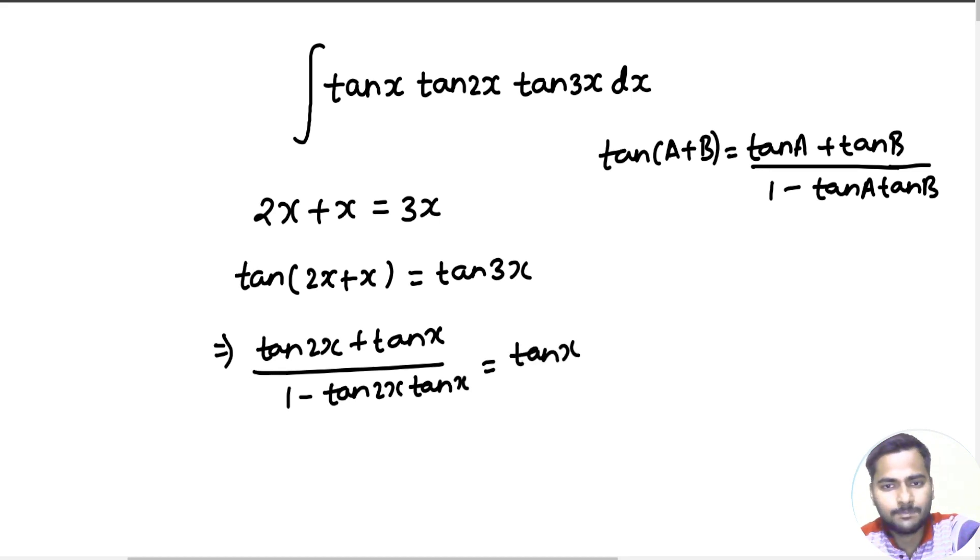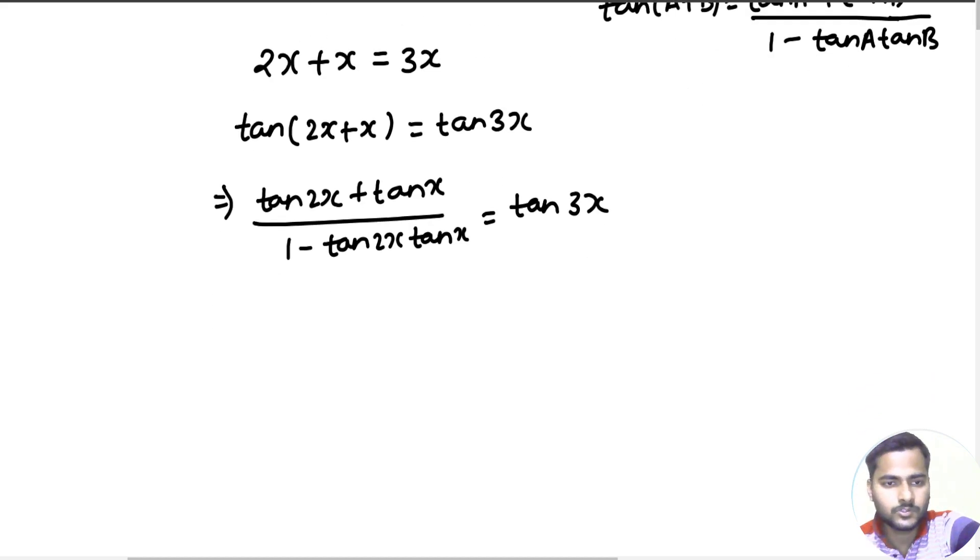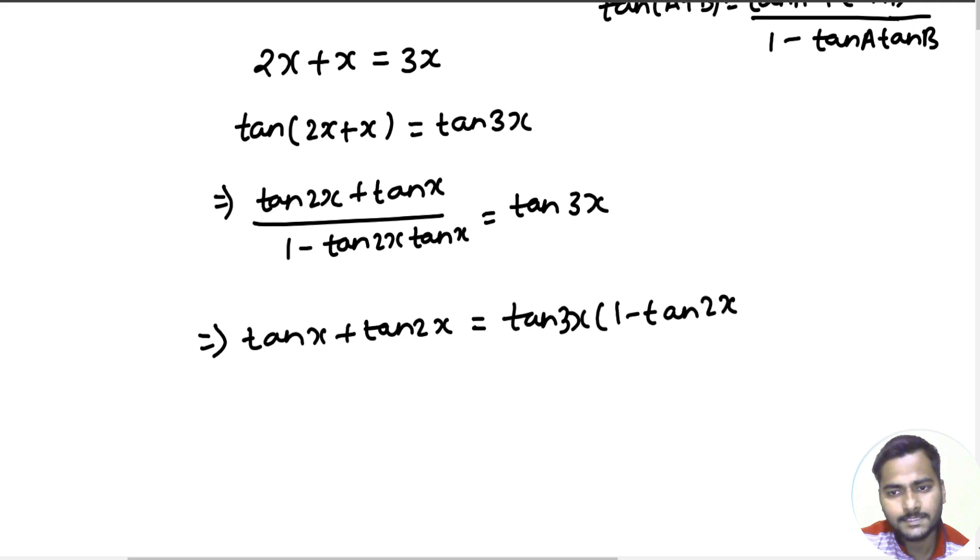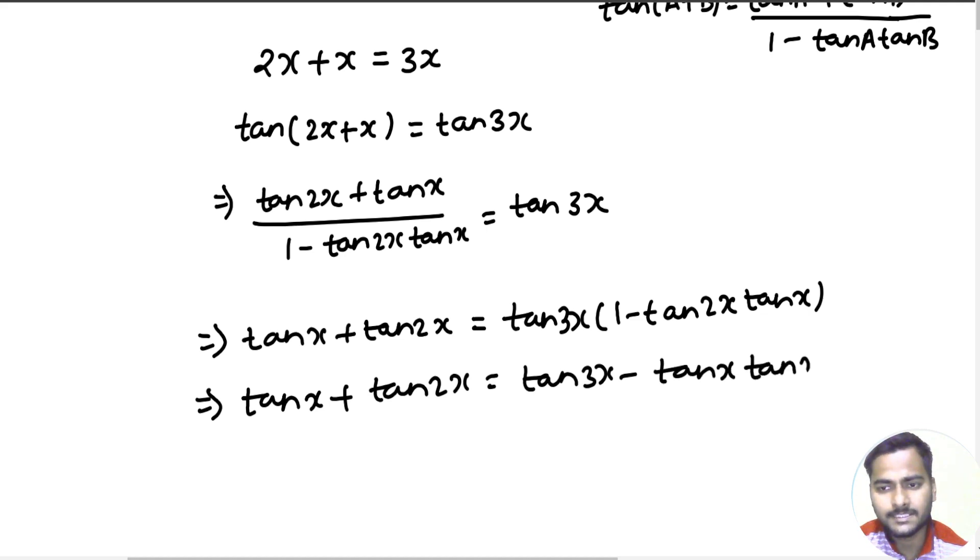If I cross multiply, I will get tan x plus tan 2x giving me tan 3x multiplied by 1 minus tan 2x tan x. So if I multiply tan 3x inside, I will get tan x plus tan 2x giving me tan 3x minus tan x tan 2x tan 3x.